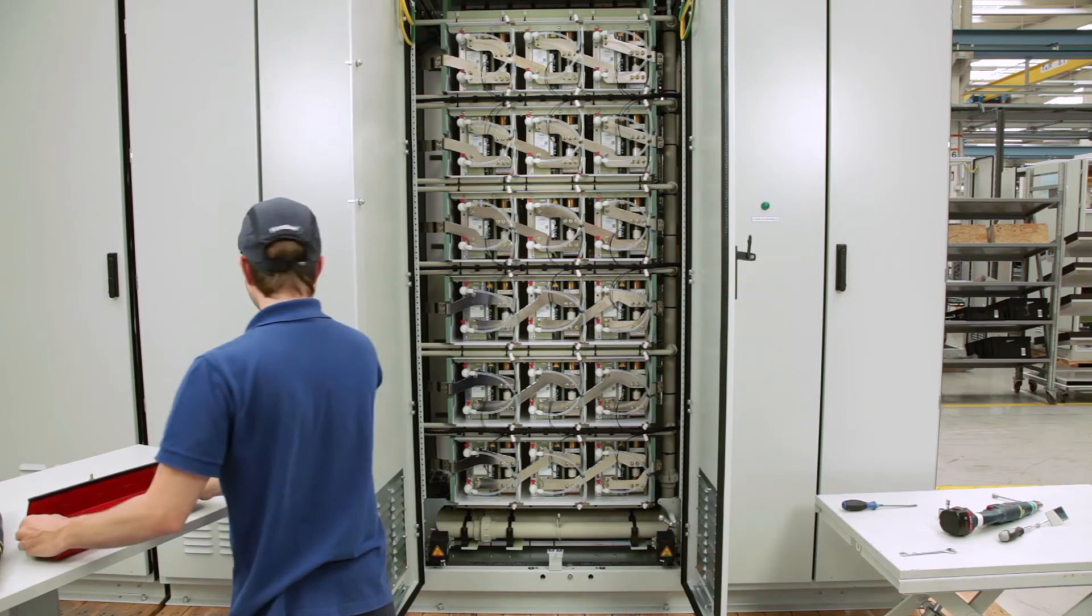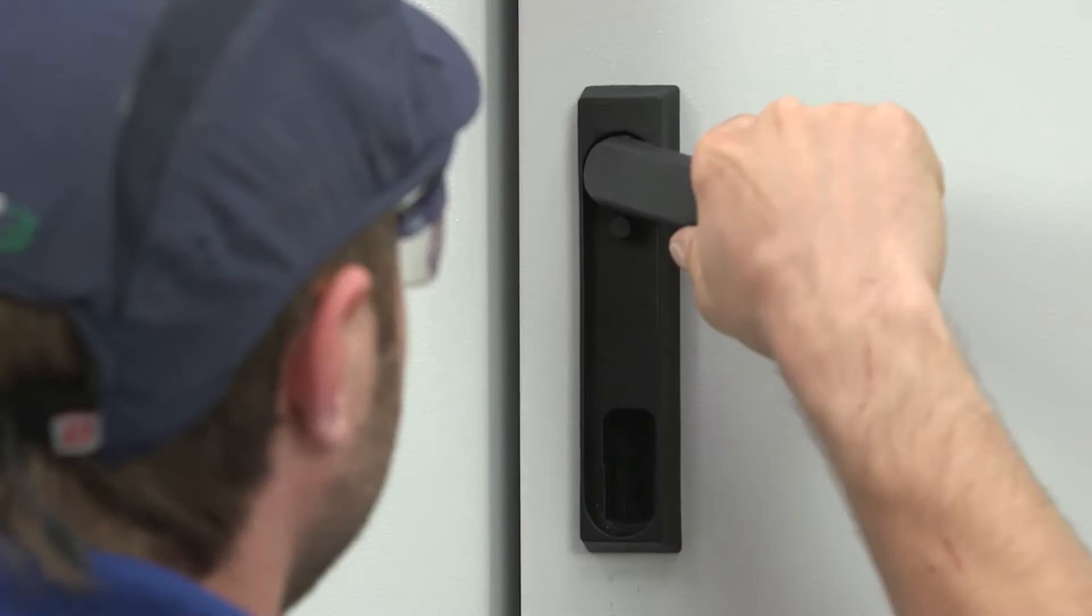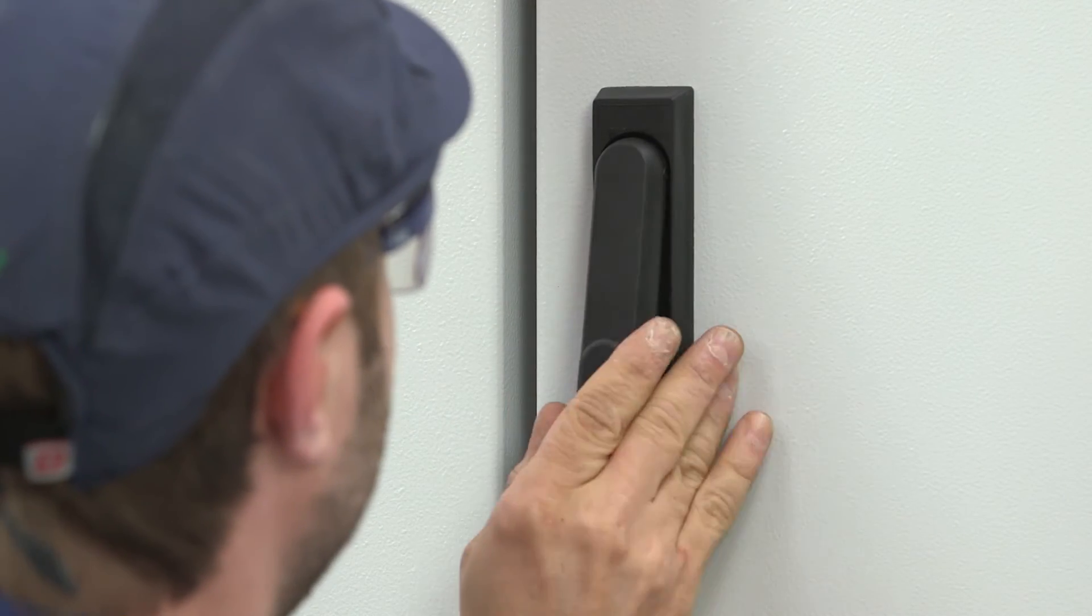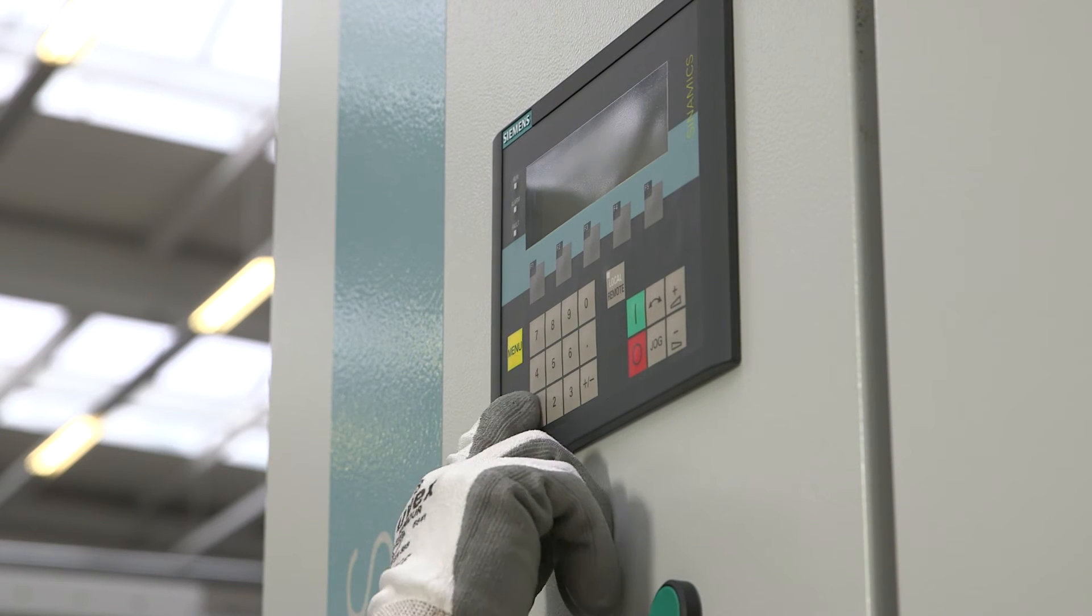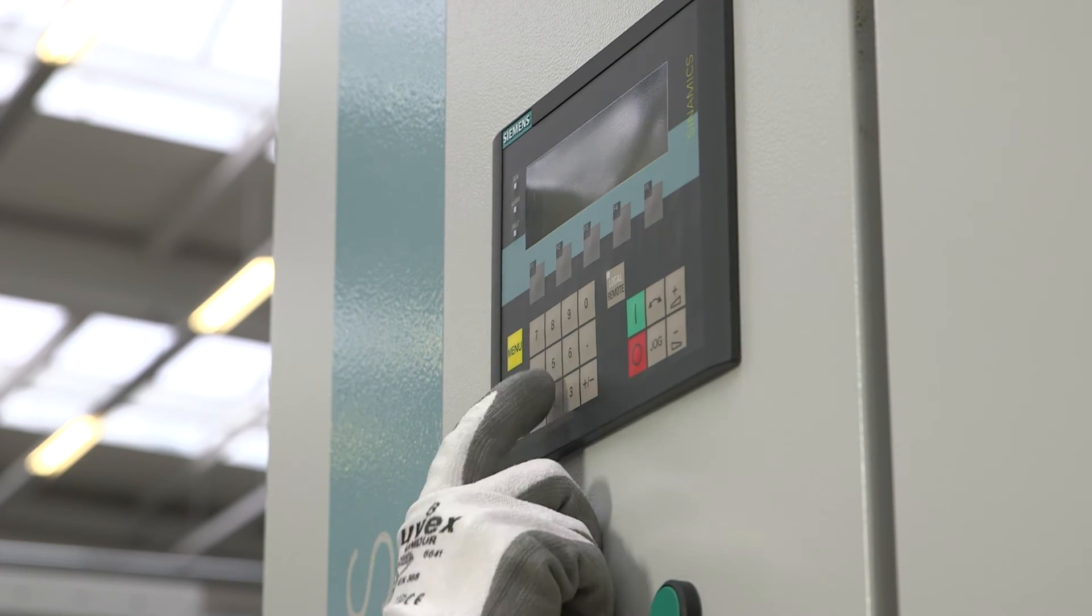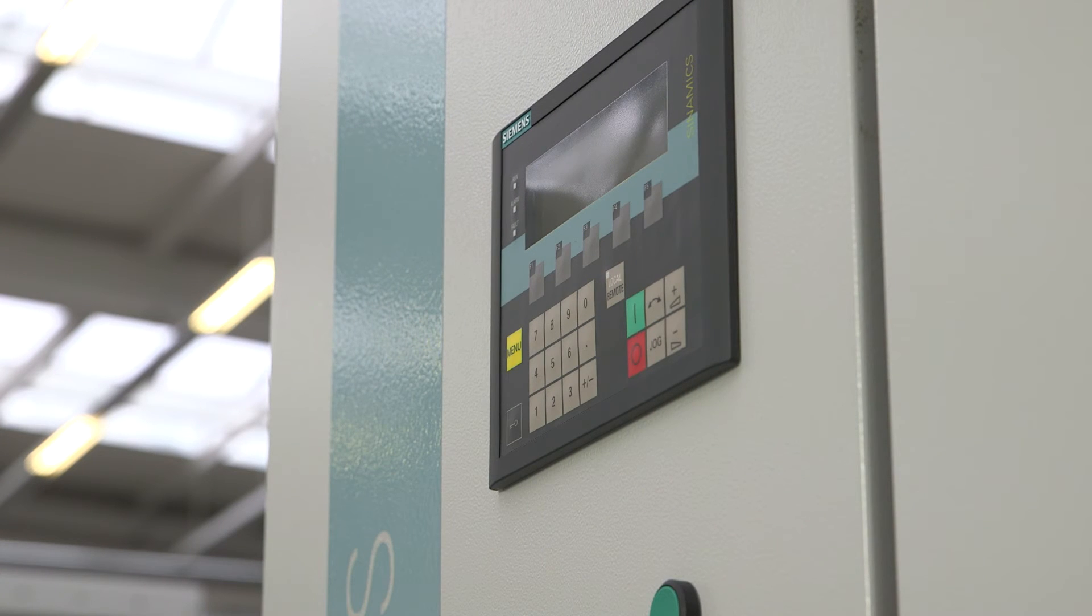Then close and lock all of the doors of the drive and switch on the auxiliary voltage again. When the bypass has been triggered, the power cell is electronically marked. After installing the new power cell and the bypass, you must reset this marking.